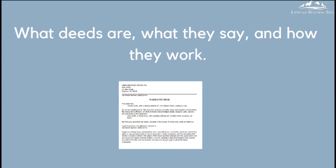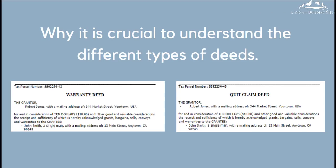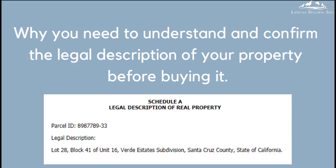You'll learn what deeds are, what they say, and how they work. When you buy a property, you will have in your possession the deed to that property as proof of your ownership, and you need to understand what that document says. You'll learn why it's crucial to understand the different types of deeds because they could affect the ownership of your property. You'll learn why you need to understand and confirm the legal description of your property before buying it — this is often overlooked by buyers. The legal description actually tells you and everyone else what you own, and it's very important to make sure it's correct on the deed.